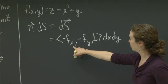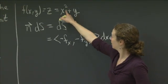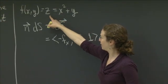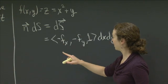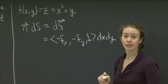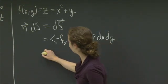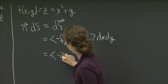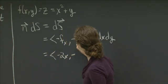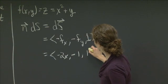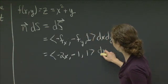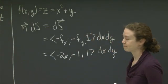So what do we have here with f sub x? f sub x, because f is equal to z, f sub x is 2x, and f sub y is 1. So in our case, we get exactly minus 2x comma minus 1 comma 1 dx dy.